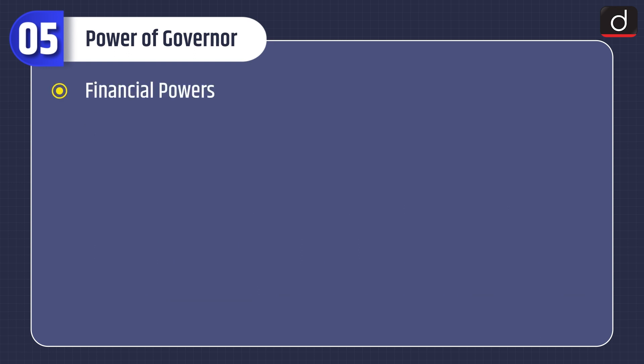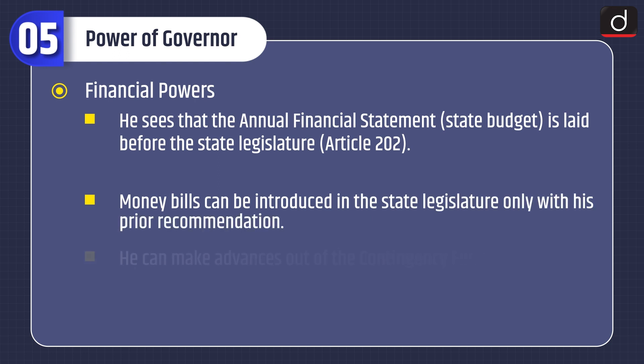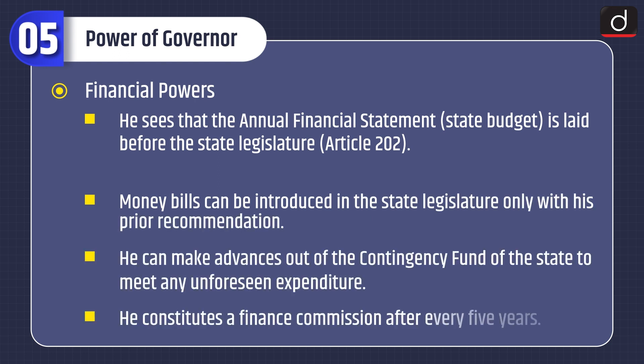Under financial powers, he sees that the annual financial statement or state budget is laid before the state legislature according to Article 202. Money bills can be introduced in the state legislature only with his prior recommendation. He can make advances out of the contingency fund of the state to meet any unforeseen expenditure, and he constitutes a finance commission after every five years.